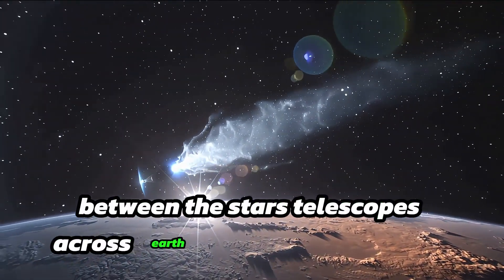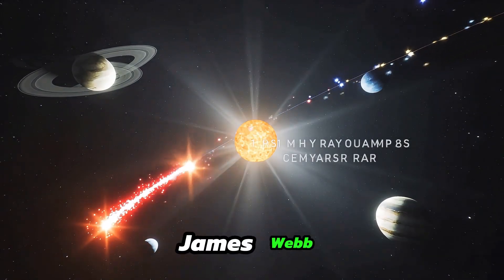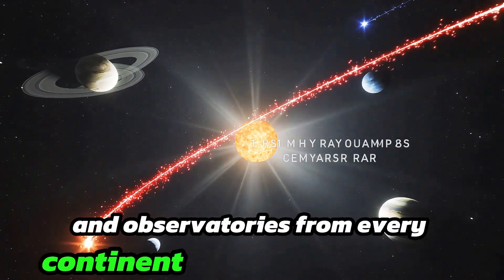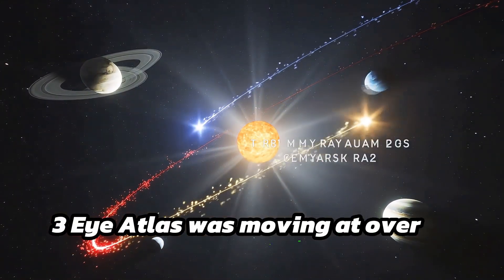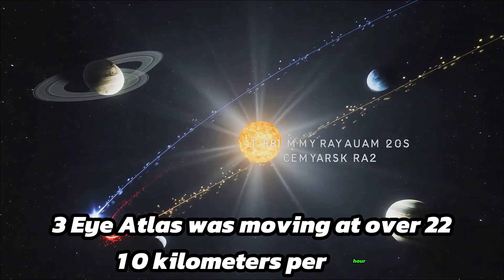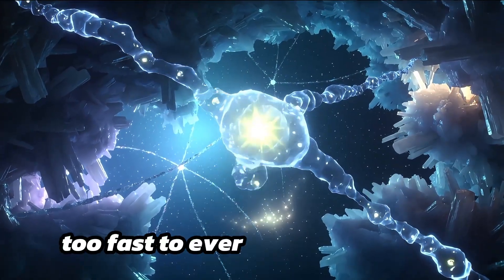Telescopes across Earth and space locked on. Hubble, James Webb, and observatories from every continent tracked its fading light. 3i Atlas was moving at over 221,000 kilometers per hour, too fast to ever return.